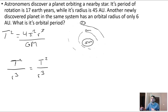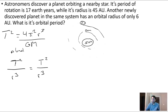Remember, what controls the orbits of planets isn't the orbiting object itself — it's the thing being orbited. Since both objects are orbiting the same star, their masses don't really make a difference. What does matter is how far away they are, and that affects the period. So this ratio must be maintained: the further away you get, the longer the period.